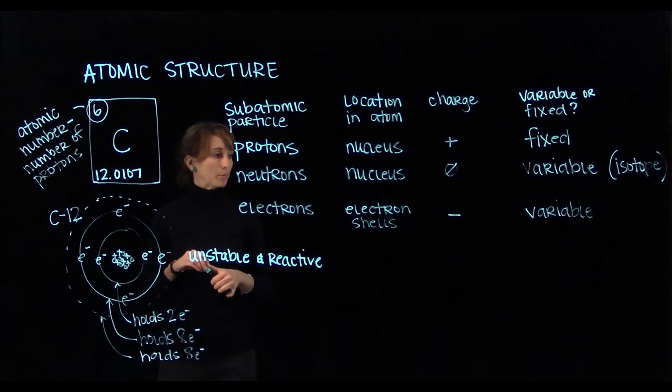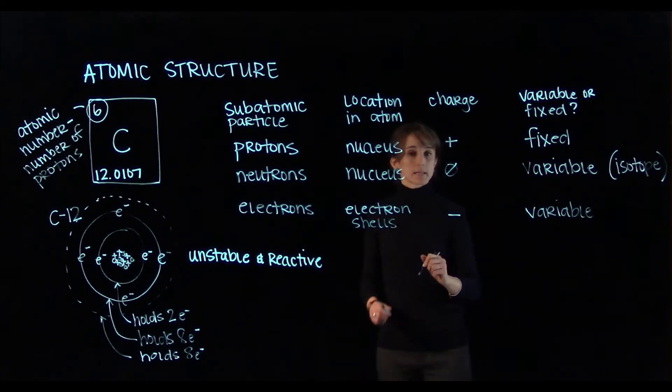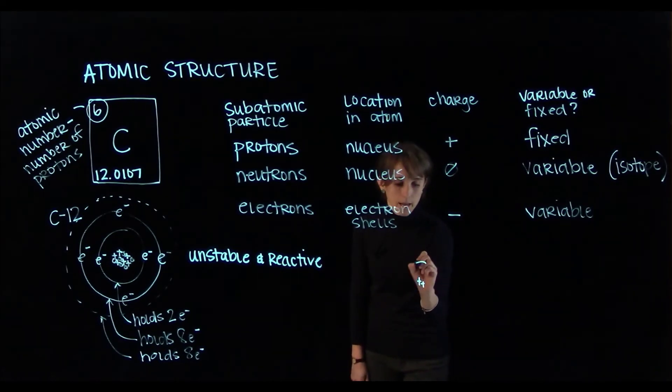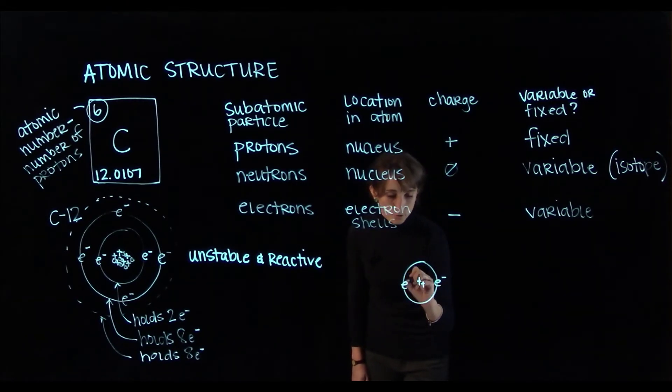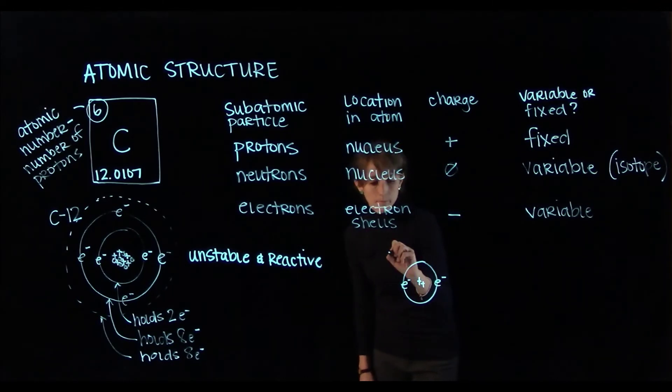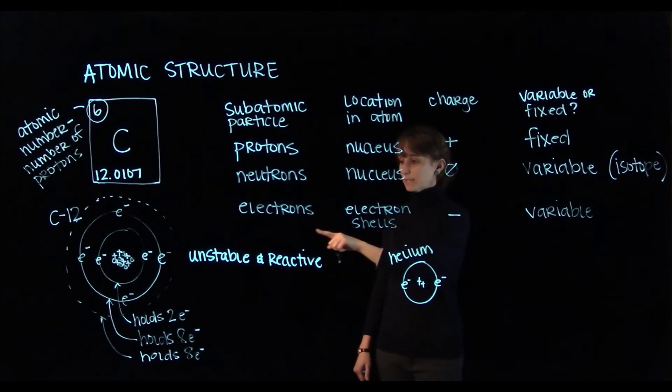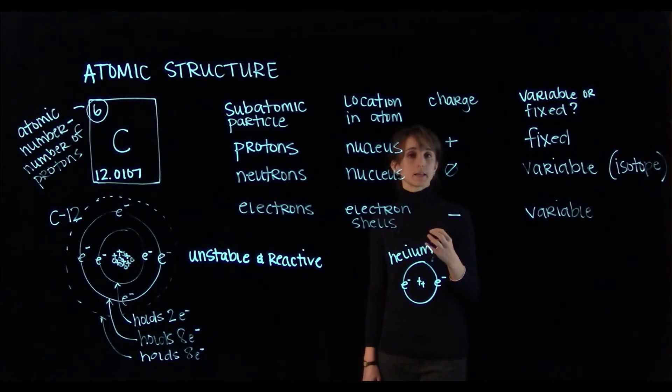If we take an example like helium, helium has an atomic number of two, which means it has two protons in its nucleus, and it has two electrons orbiting the nucleus in that first and smallest shell. Now helium only has one electron shell, and we already said that that electron shell can only ever hold two electrons, which means that helium has a full outer shell.